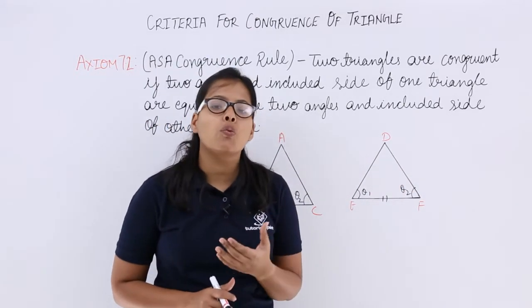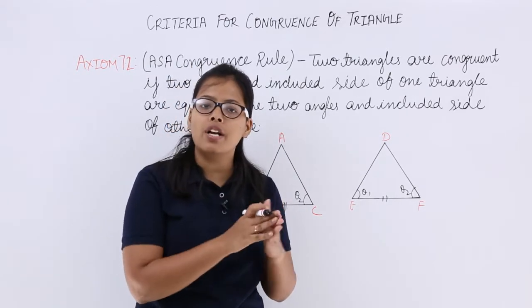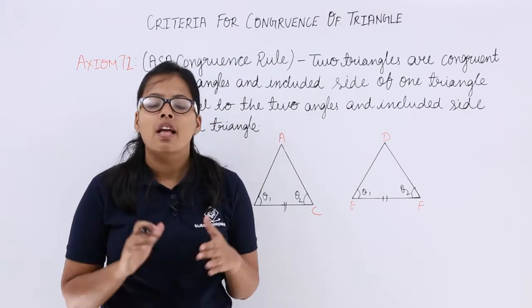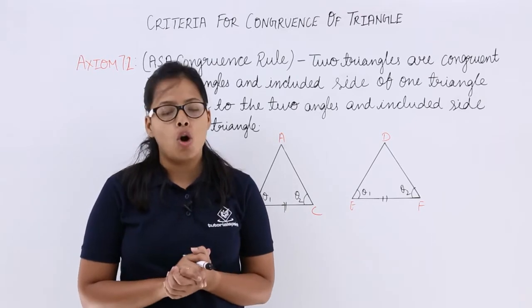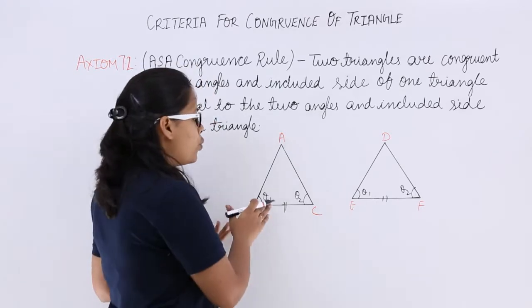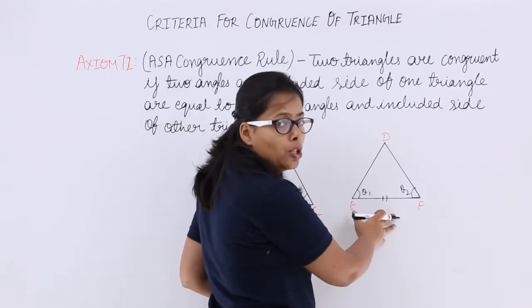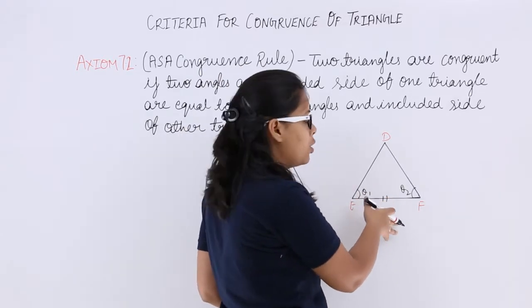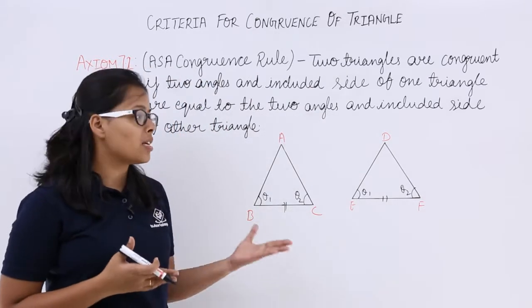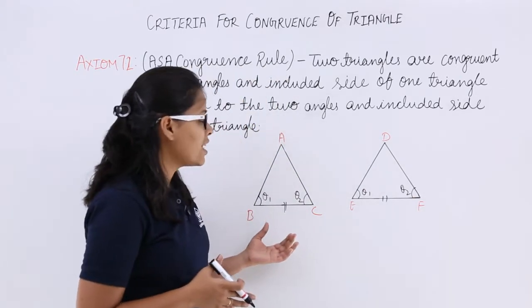In the previous case, the scenario was: if two sides and the included angle of one triangle are equal to two sides and the included angle of the other triangle, then those two triangles are congruent. In this case, it is said that if two angles and the included side of one triangle are equal to two angles and included side of the other triangle, then those two triangles are supposed to be congruent.